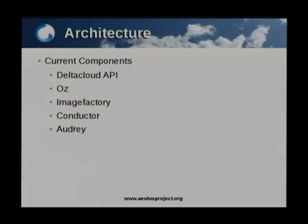The current components of ELIS include five components. The first is the Delta Cloud API. Delta Cloud is basically the foundation for ELIS. It uses a RESTful API that abstracts and manages resources from various cloud providers. There's support for EC2, Overt, Rev, vSphere, OpenStack, Rackspace, Eucalyptus, and others including remote hosting.